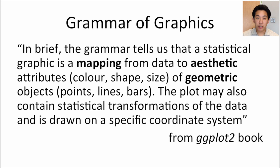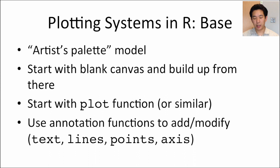The plot may also contain statistical transformations of the data and is drawn on a specific coordinate system. So we have a mapping from data to aesthetics, geometric objects, statistics, and a coordinate system. Before getting specifically to how ggplot2 works, it's useful to put it in context of the other R graphics systems. The base R plotting system has a model you can imagine as an artist's palette model.